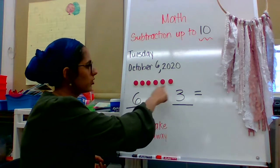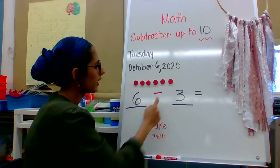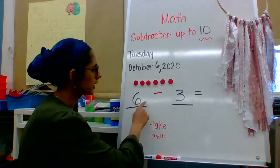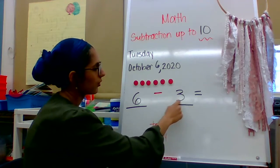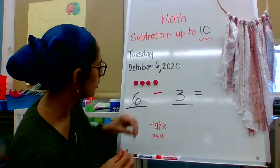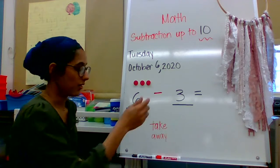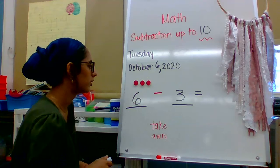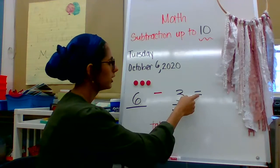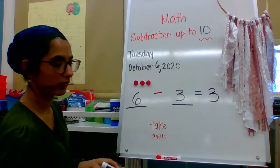So I have six minus three. What do I do to my counters? Call it out. I take away. Nice job. So let's take away — how many am I taking away? Am I taking away six or three? Read the sentence: it's six minus three, so we take away three. Let's count three and take them away. Ready? One, two, three. How many counters do I have left? Three counters. One, two, three. So six minus three — six take away three is equal to three.